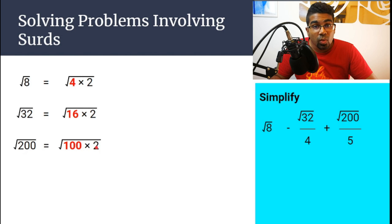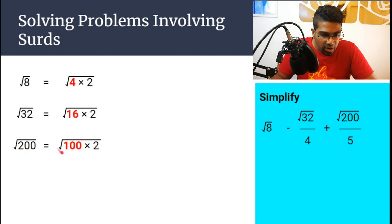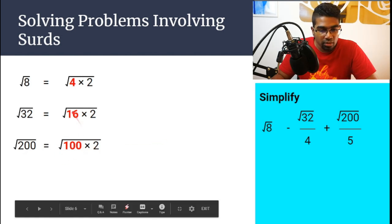The reason we choose a perfect square is because this is a square root. Once we factorize all the perfect squares from the number inside the square root, then we can apply the first law.